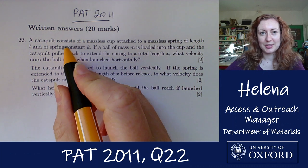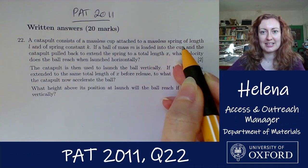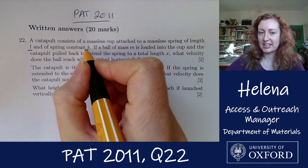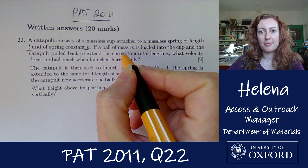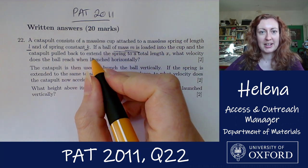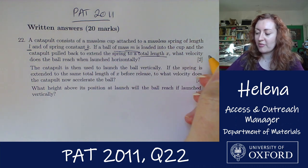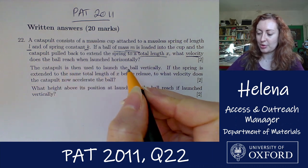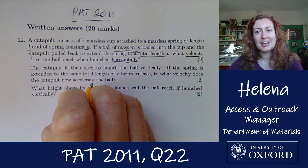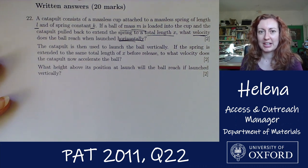We have a catapult which consists of a massless cup attached to a massless spring of length l and spring constant k. If a ball of mass m is loaded into the cup and the catapult pulled back to extend the spring to a total length x, what velocity does the ball reach when launched horizontally? We've got a lot of information there so let's think about what's going on and draw a picture.